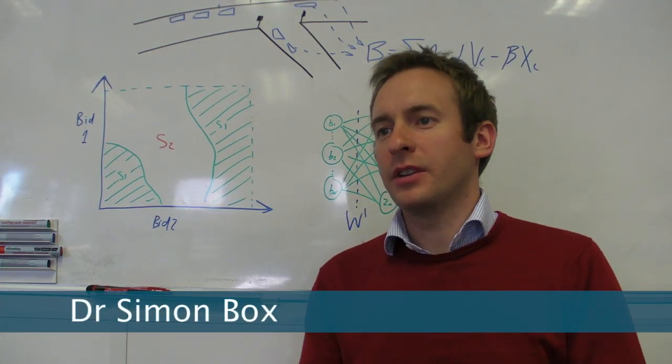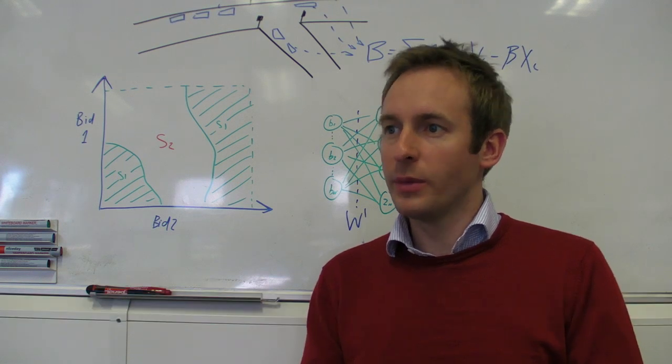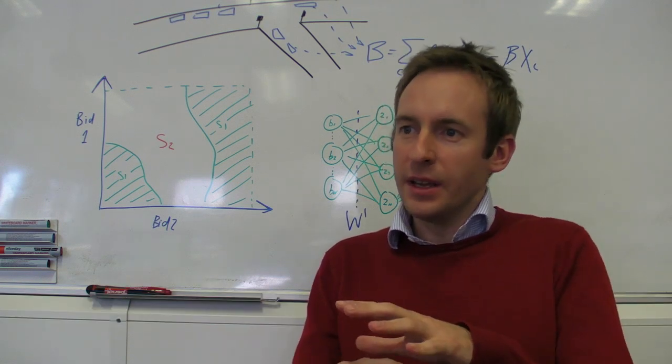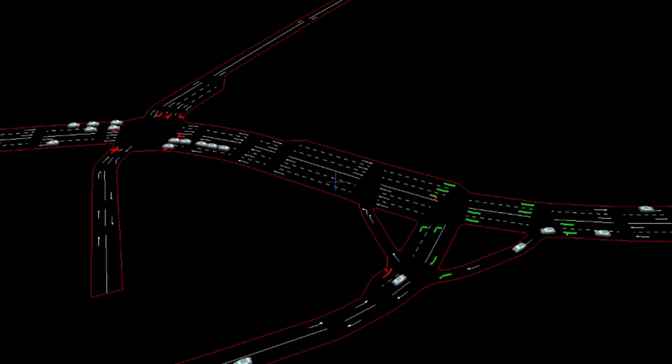We first became interested in using artificial intelligence in signal control almost by accident. We developed a computer model that allows us to simulate vehicles driving through traffic light control junctions, the idea being to allow us to try out different strategies for controlling the lights and evaluate how well they perform.